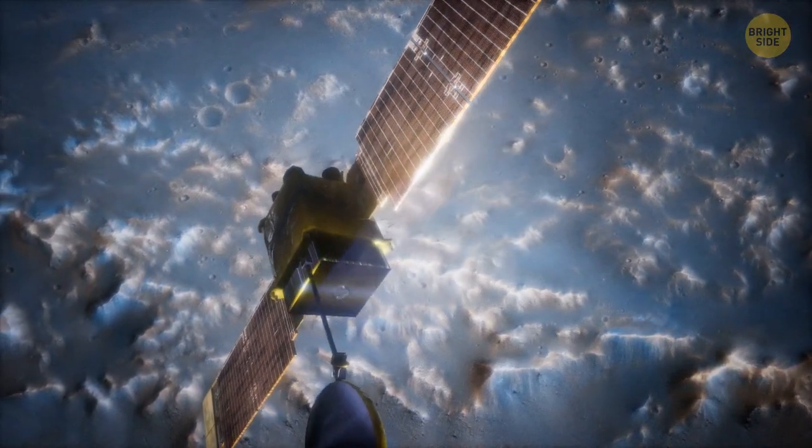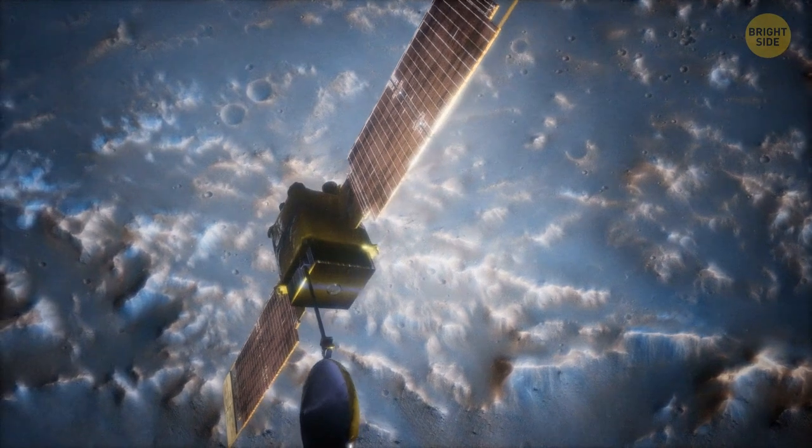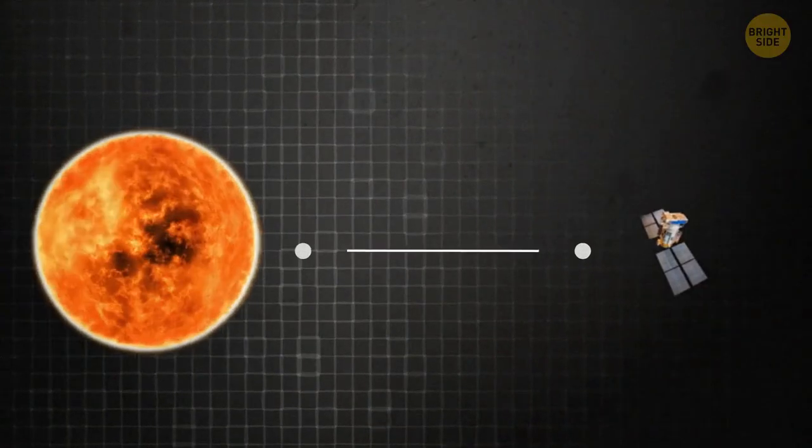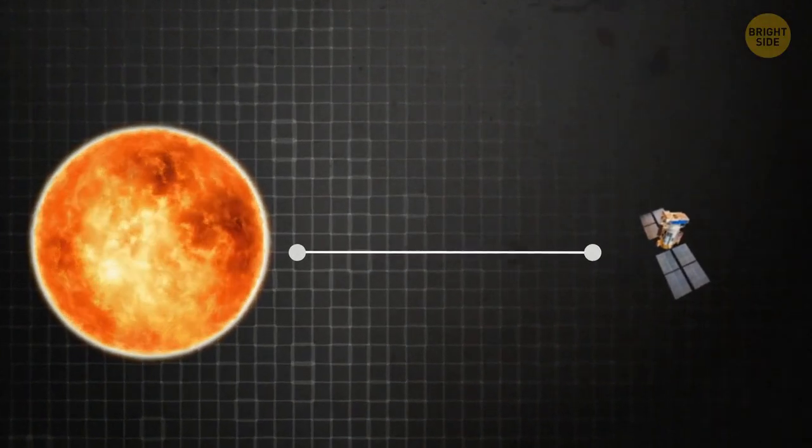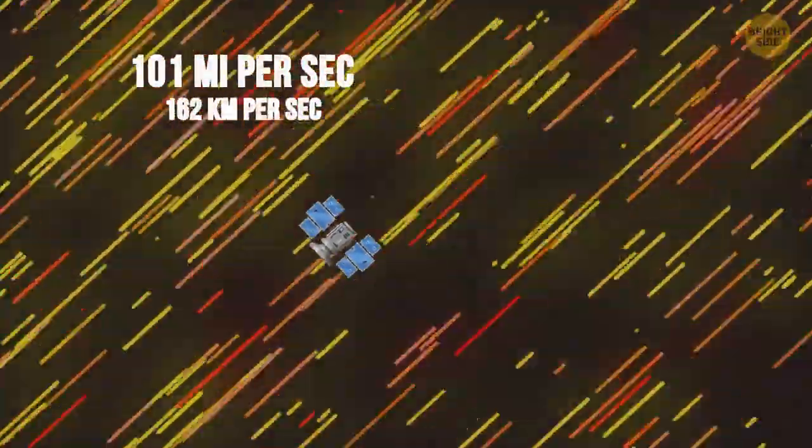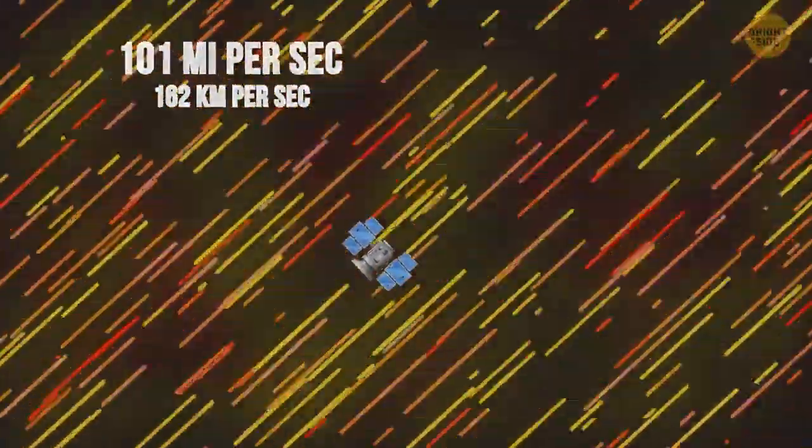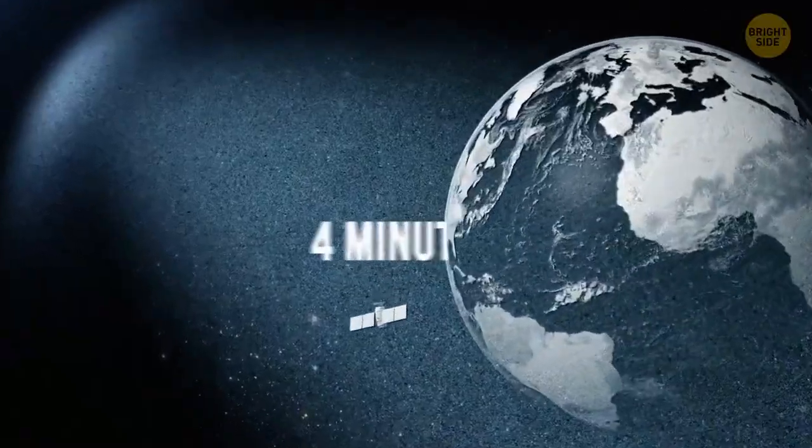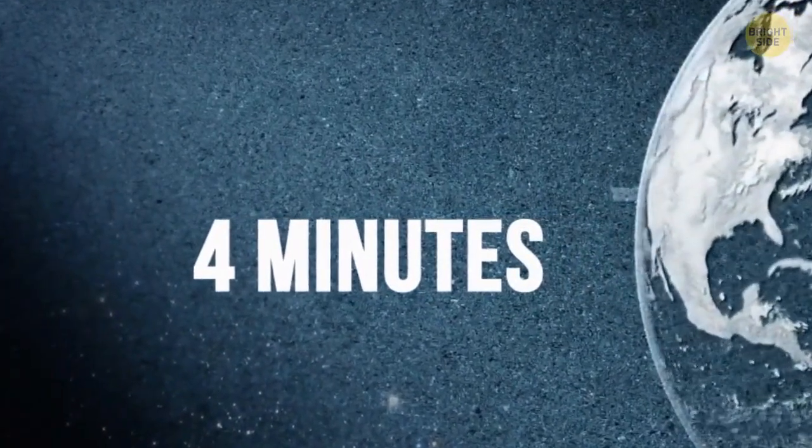While the Parker Solar Probe continues its research, it's already set several world records. It's the closest to the sun human-made object. It's also the speed record holder. During its final approach to the sun, the probe reached a speed of 101 miles per second. That means it could cover the distance from New York to Los Angeles in just 24 seconds. And a trip around Earth would take about four minutes.